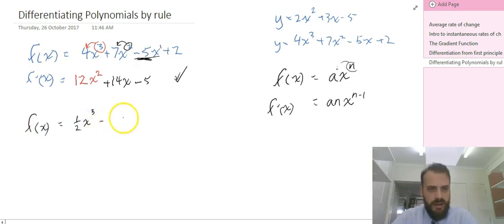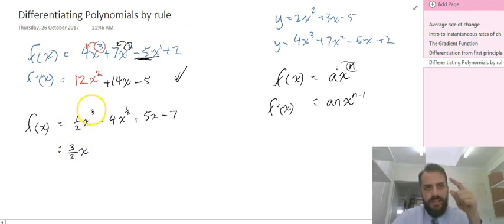All right, here's a more complicated example. Half x cubed minus 4x to the half plus 5x minus 7. Again, take the 3, bring it out front, 3 times half is 3 over 2, x. The 3, 3 minus 1 is 2.